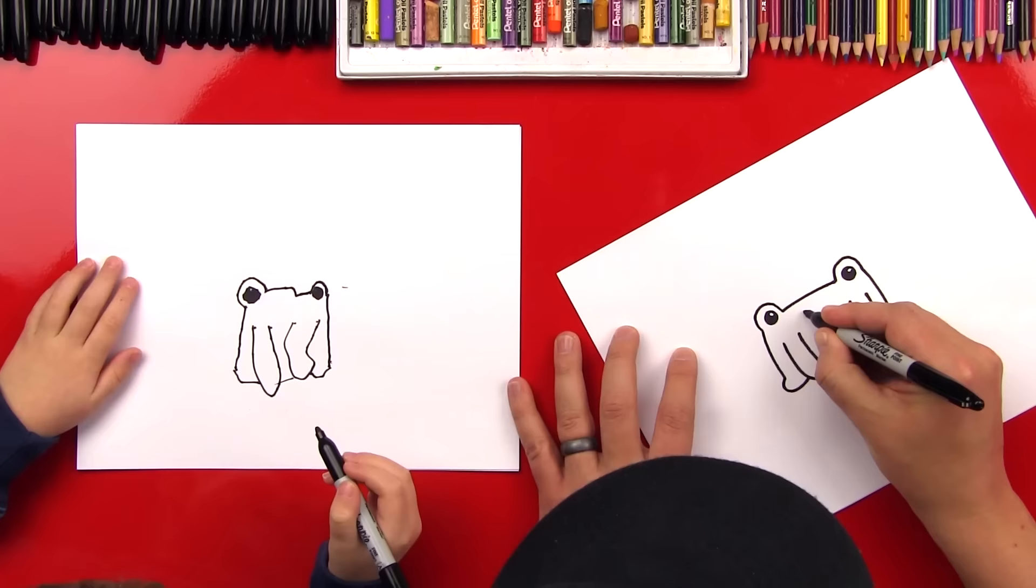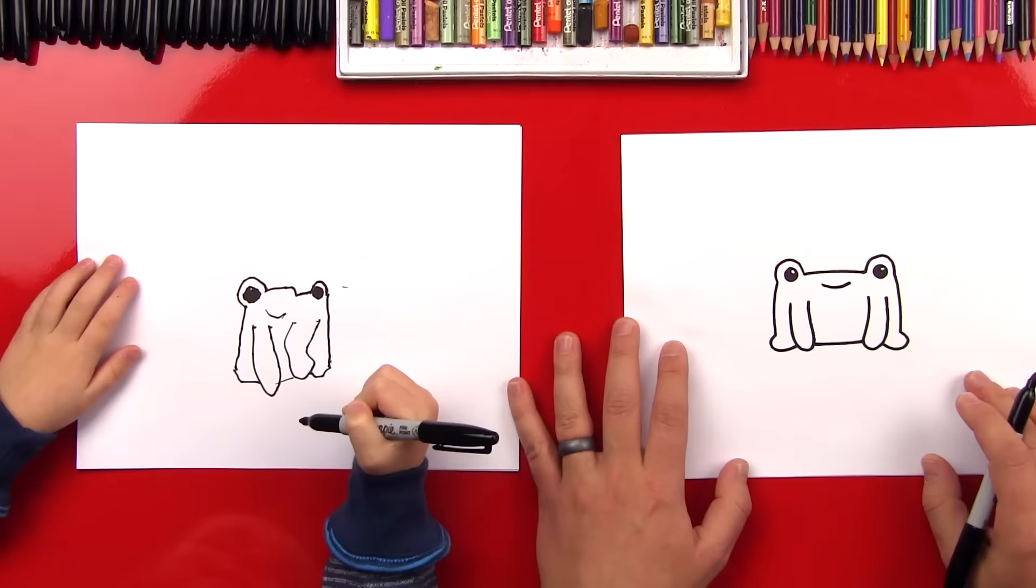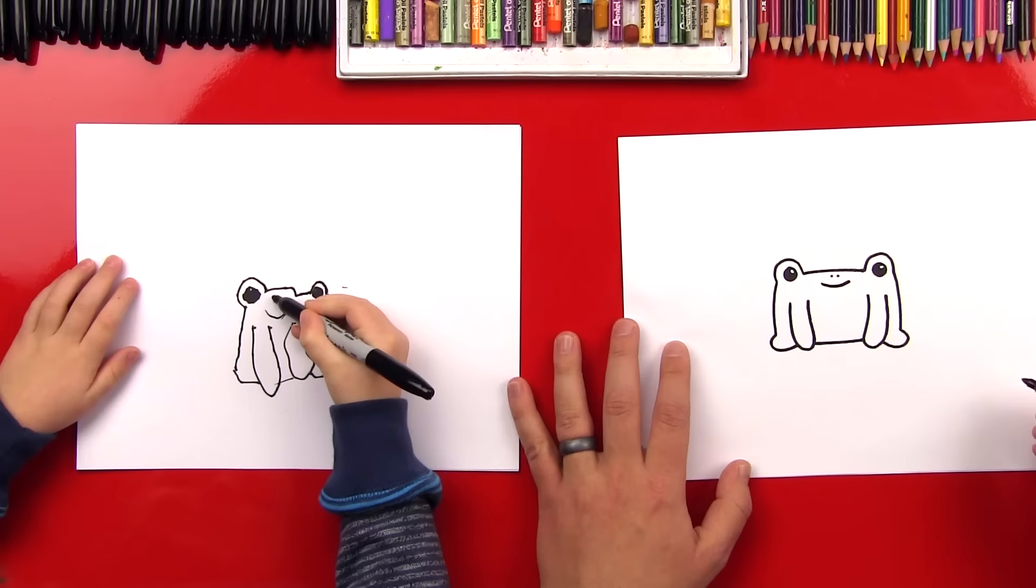Okay. What's he missing? His mouth. Yeah. He's missing a mouth. Let's put a little smile right here in between his eyes. Good. Awesome. Okay. Now we can draw two little nostrils for his nose. Good. Awesome.